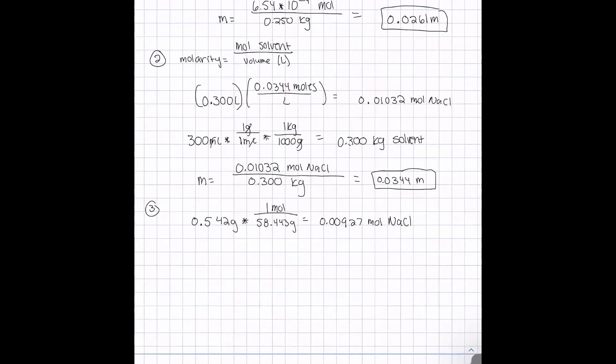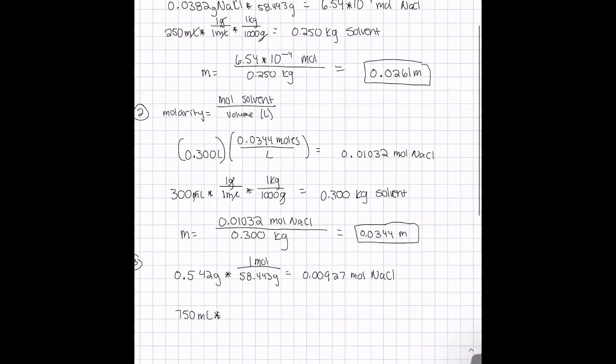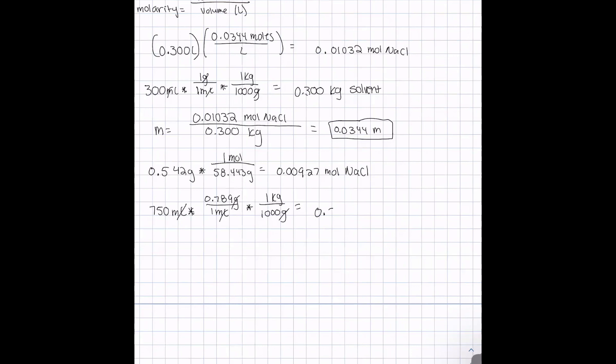We have to find the mass of our solvent. This time we have 750 milliliters of ethanol, and the problem tells us the density of ethanol is 0.789 grams per milliliter. We have to convert to kilograms from grams. That will give us 0.0157 molality.